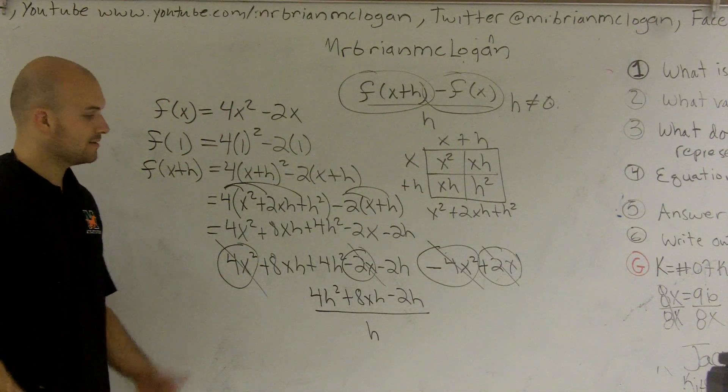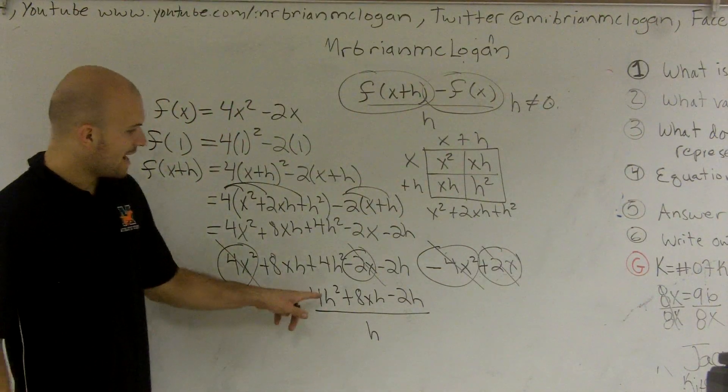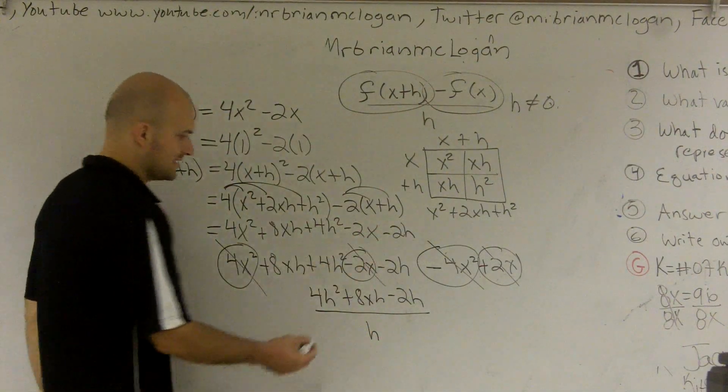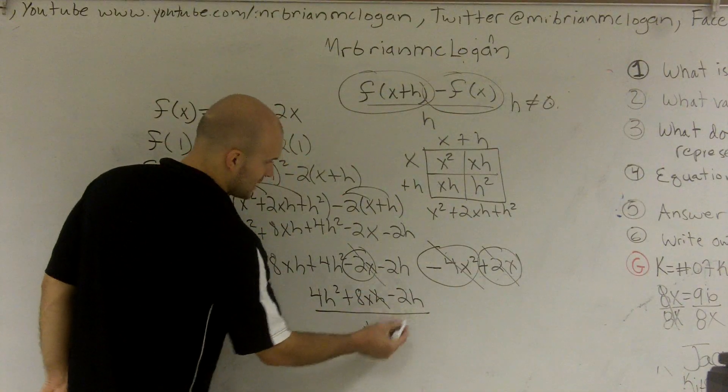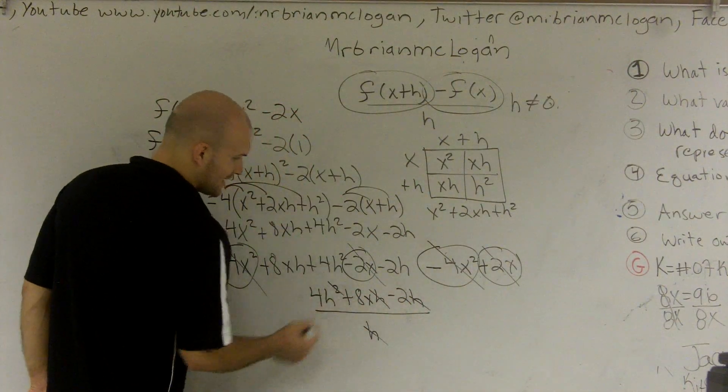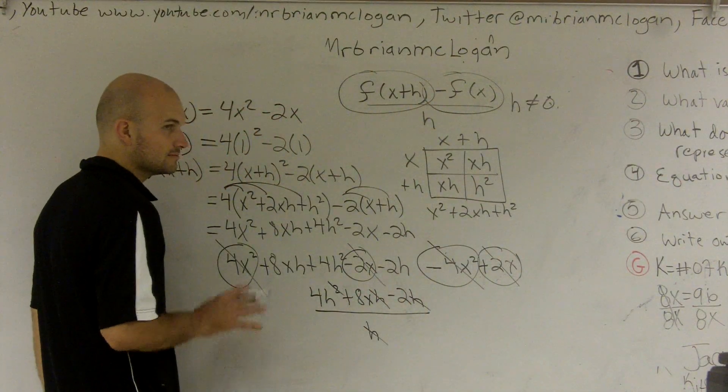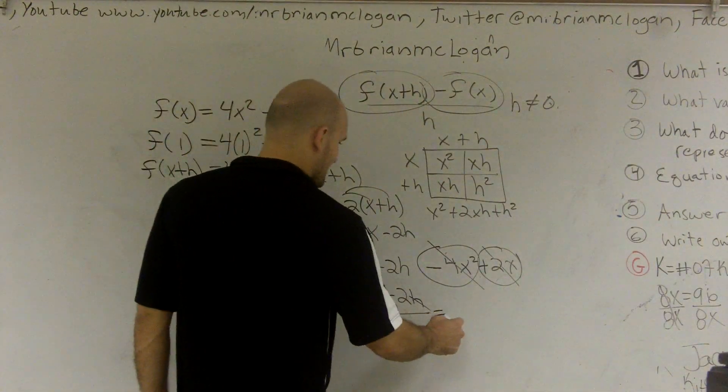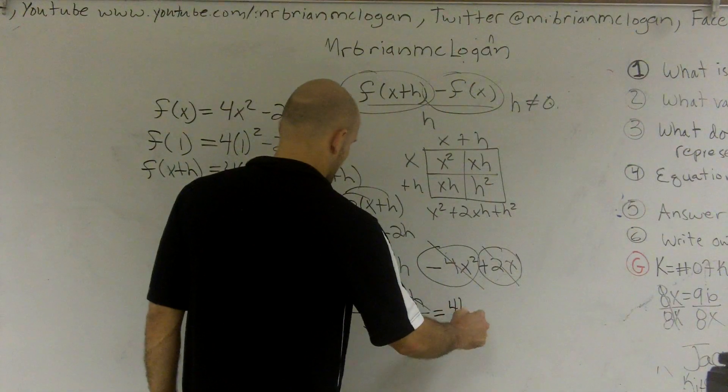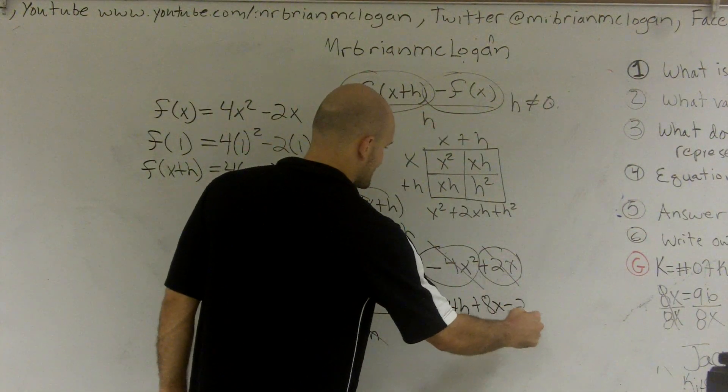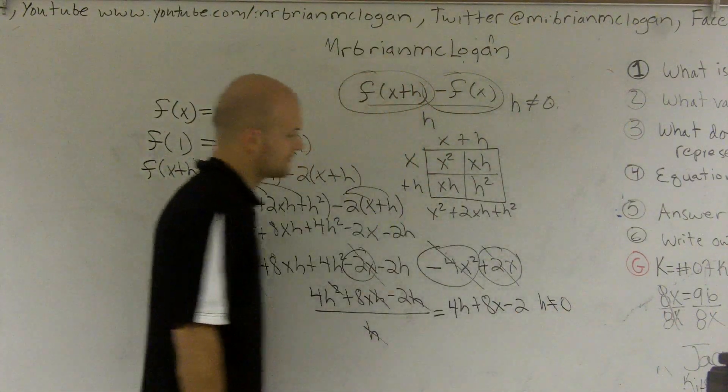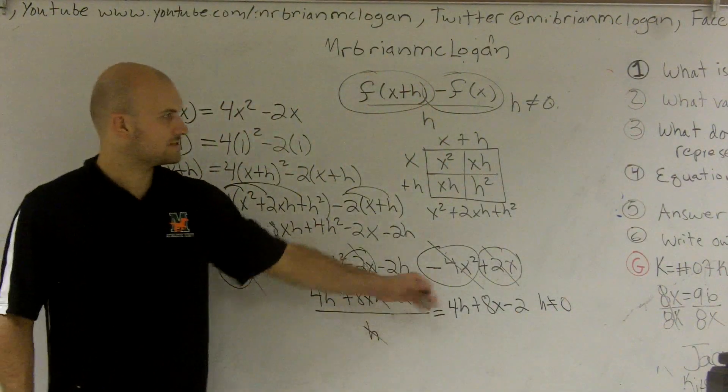Right? Well, now what we notice is, I can now simplify. I can divide this h into all of these. So what I can do is, I can cancel these h's, cancel out, cancels out, and cancels out. Right? Right? So therefore, my final answer is 4h plus 8x minus 2, and where h cannot equal 0. That's all I want to do.